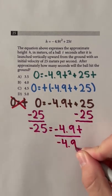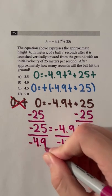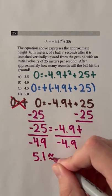Lastly, we can divide both sides of the equation by negative 4.9 to see that t is approximately 5.1.